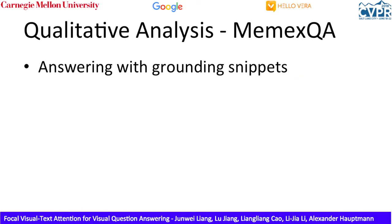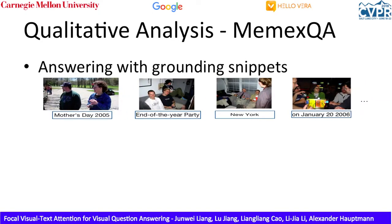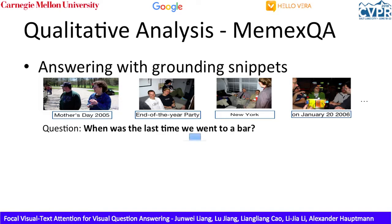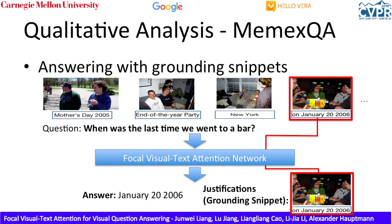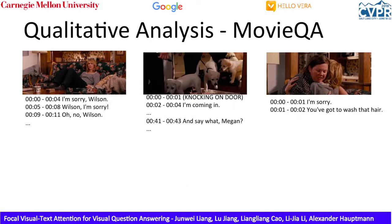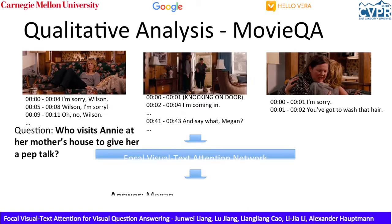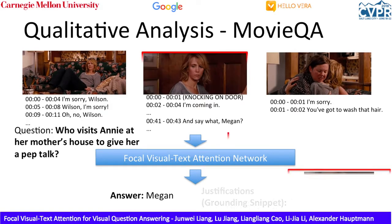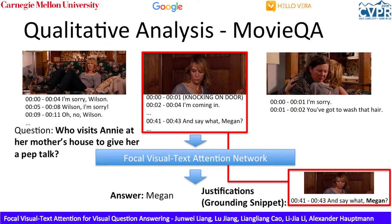This is a qualitative analysis of our model. Given a personal collection of sequences containing visual and text information, when asked 'When was the last time we went to a bar?', our Focal Visual Text Attention network outputs the correct answer and also gives the correct grounding snippet — a photo of people drinking at a bar. Similarly, in Movie QA, given multiple video clips and subtitles from the same movie, our system finds the correct answer and also pinpoints the right frame and subtitle.